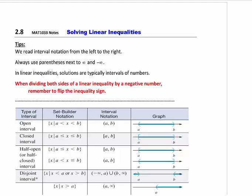There are some tips at the top. Whenever we're going for interval notation, we're always going left to right on a graph — in the number line sense. You're always starting with the smallest number first and the largest number second. If you put it in a different order, it's empty set. So the smallest number, which is on the left, goes to the largest number on the right.